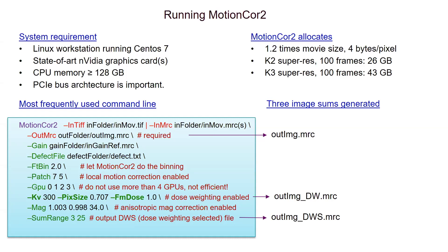MotionCor2 is compiled on a Linux workstation running CentOS 7. We recommend a state-of-the-art NVIDIA graphics card and at least 128 gigabytes of CPU memory. We also find the PCIe bus architecture has a significant role in performance. The reason we want large CPU memory is that MotionCor2 allocates a large amount of pinned memory that cannot be shared by other processes — typically 1.2 times the movie size calculated based on four bytes per pixel. For a K2 Super-resolution movie of 100 frames, MotionCor2 will allocate about 26 gigabytes. For K3 Super-resolution movies, this amount goes up to 43 gigabytes.